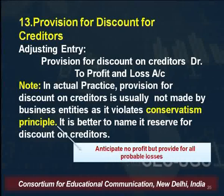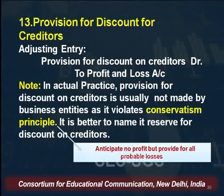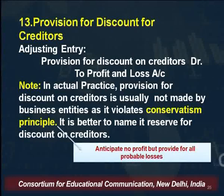This provision for discount on creditors violates the conservatism principle, but from an academic purpose it is taught. The adjustment entry to record this is: provision for discount on creditors account debit to profit and loss account — since it is an income for the business, it will be shown on the credit side of the profit and loss account. Profit and loss account is nominal in nature, so all expenses and losses are shown on the debit side and all incomes and gains are shown on the credit side.